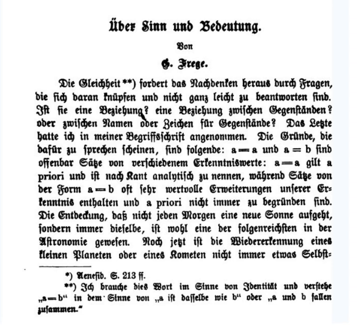Frege justified the distinction in a number of ways. Sense is something possessed by a name, whether or not it has a reference. For example, the name is intelligible, and therefore has a sense, even though there is no individual object to which the name corresponds. The sense of different names is different, even when their reference is the same.